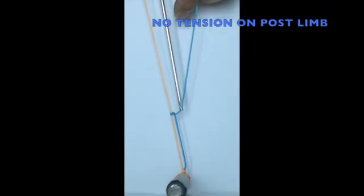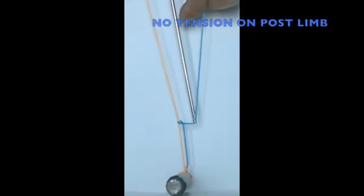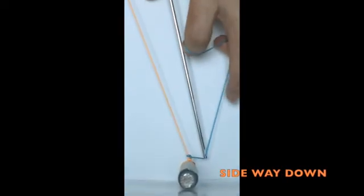This can be avoided by delivering the knot sideways down without tension on the post or the blue limb.